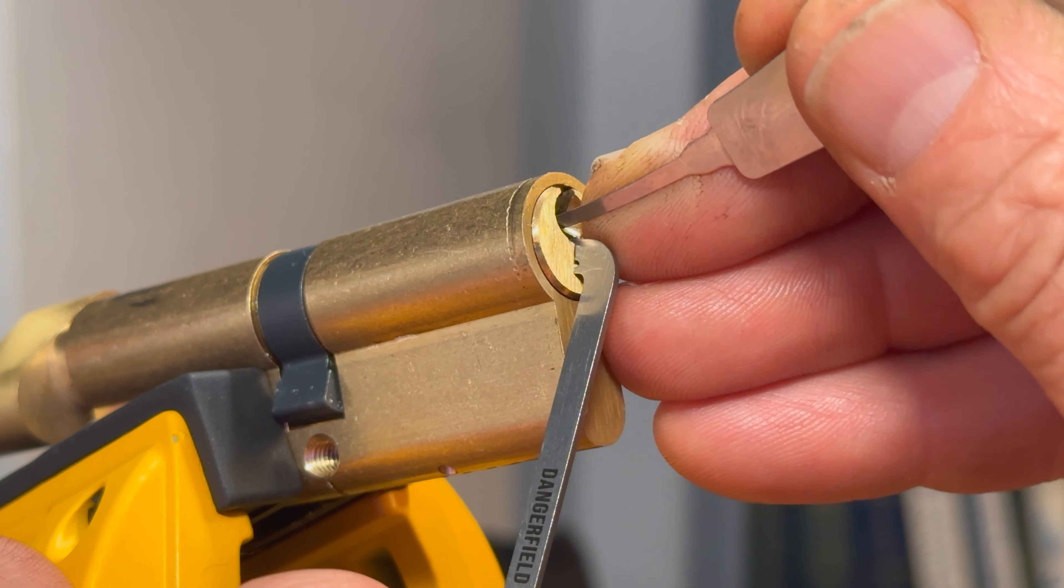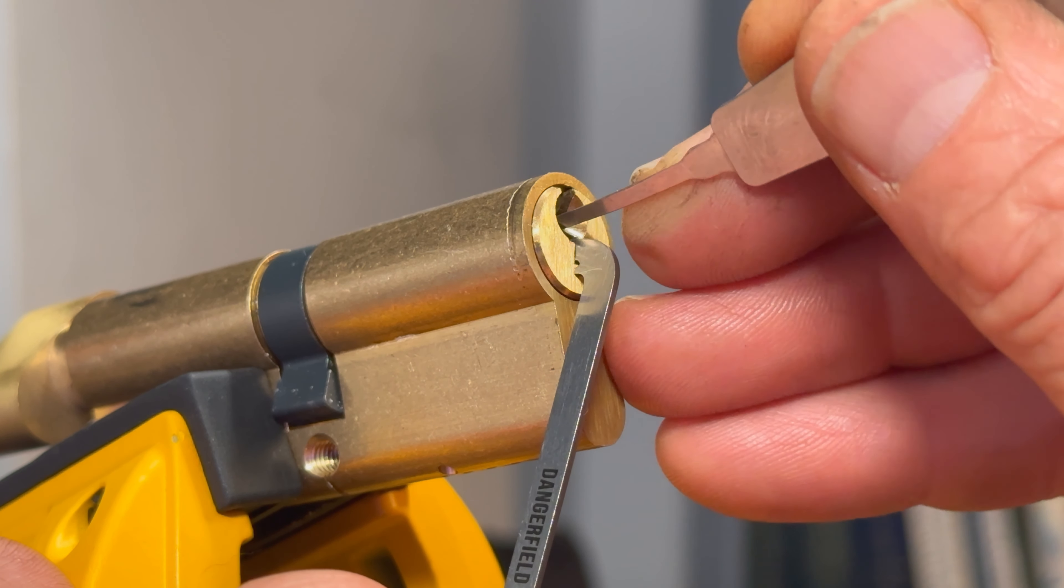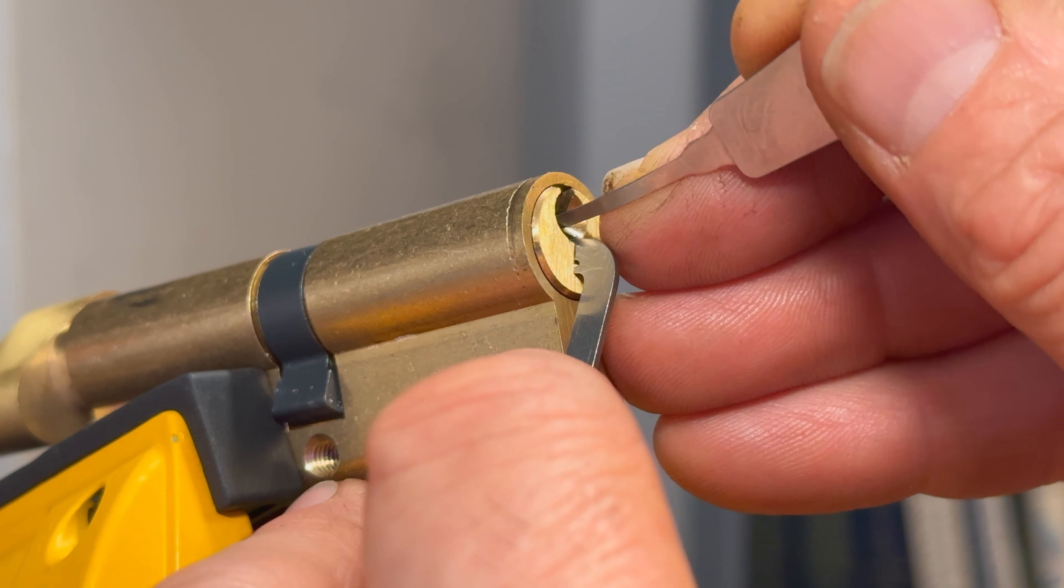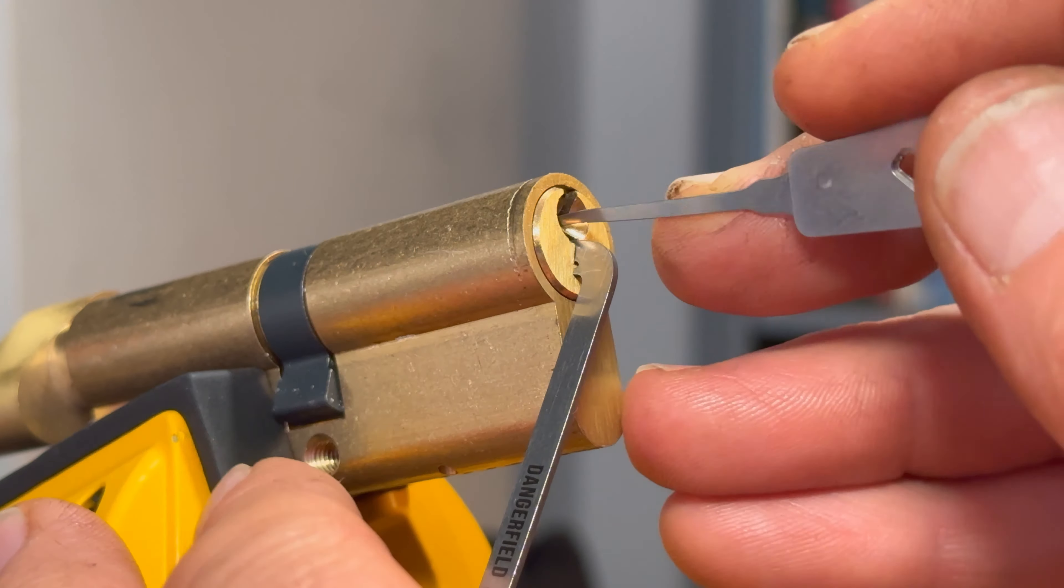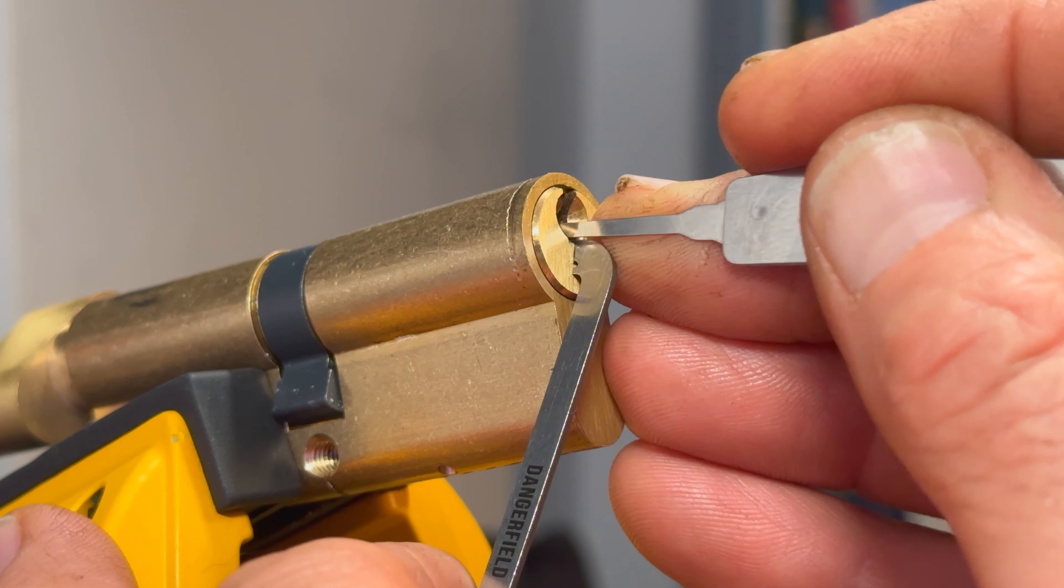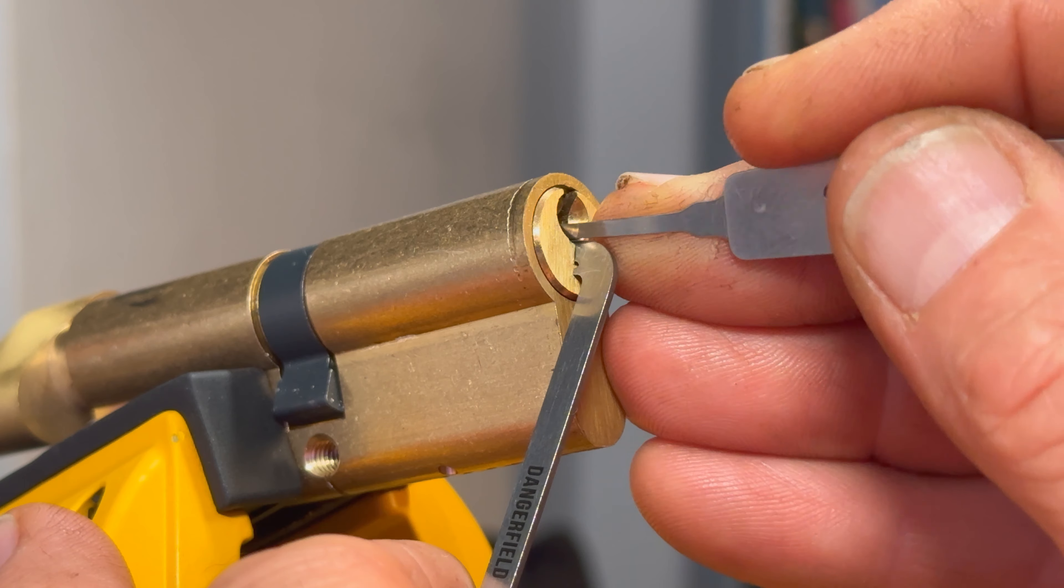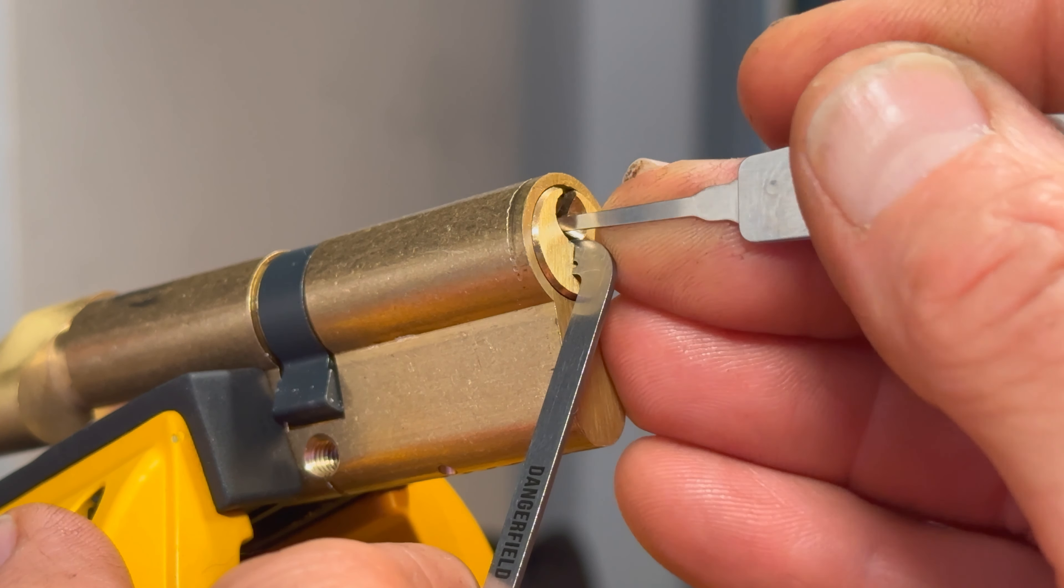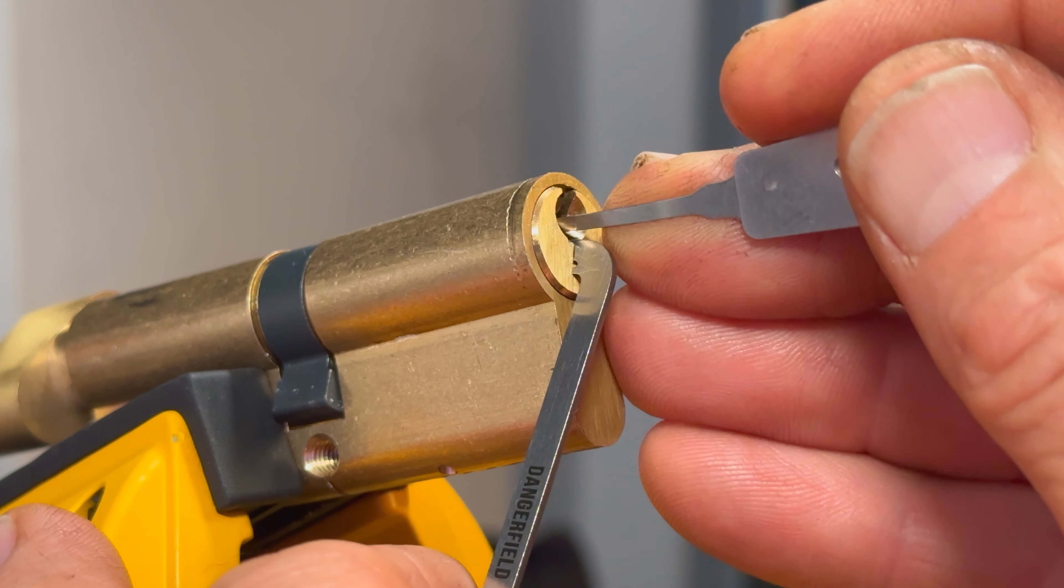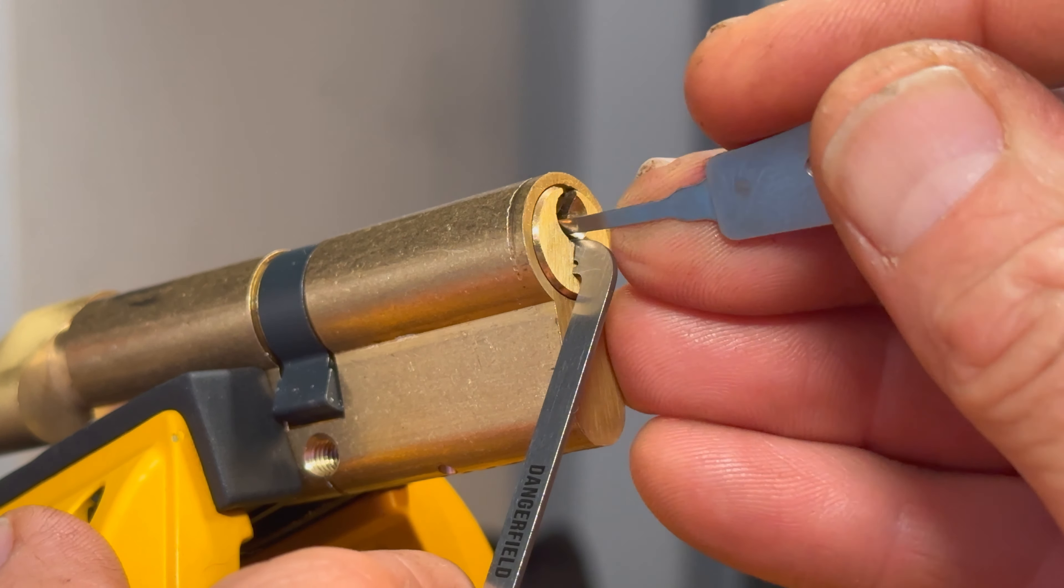There's a spool there on pin three giving me counter rotation. See if we can set that. Okay that's now set and we've got an even deeper false set. Pin four is solid. Let's skip that one for now.